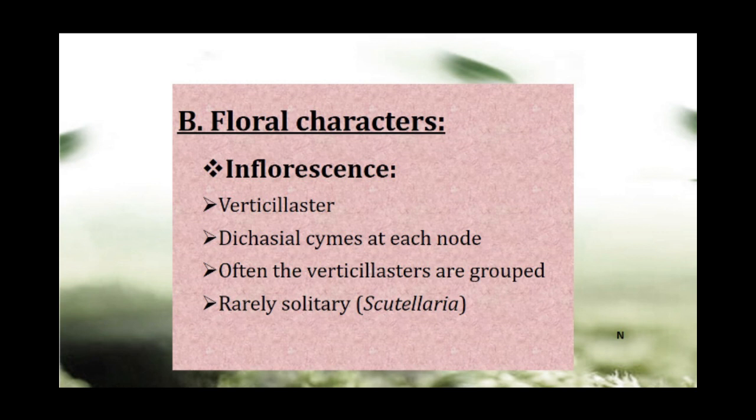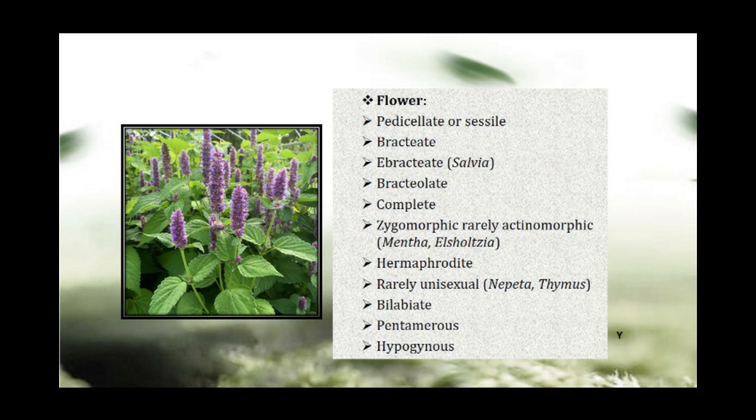Solitary inflorescence is present in some species like Scutellaria. The flower is pedicillate, meaning a flower with a stalk. They may be absent or sessile, and bractiate — having a bract — in Salvia species, or ebractiate in complete condition.